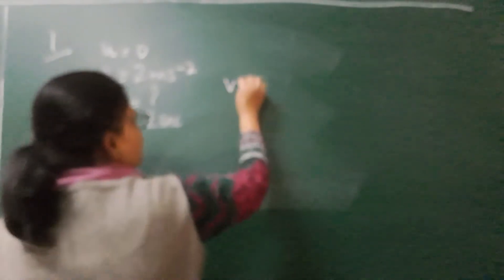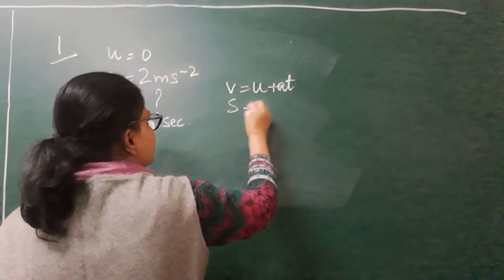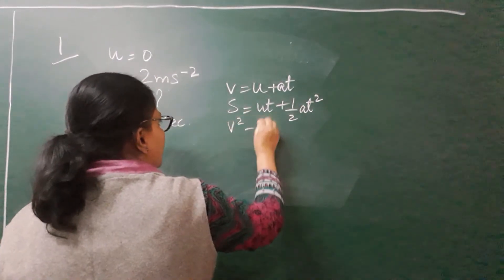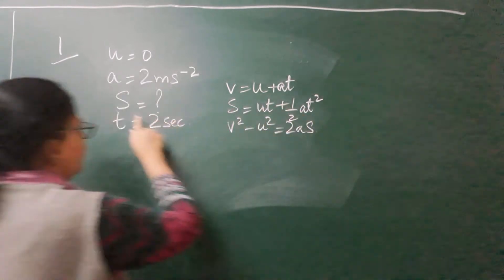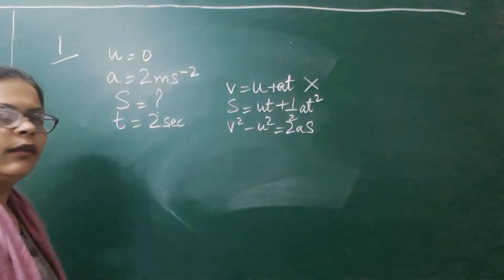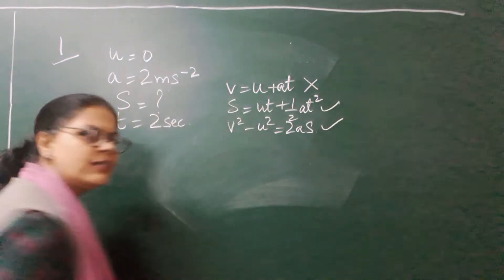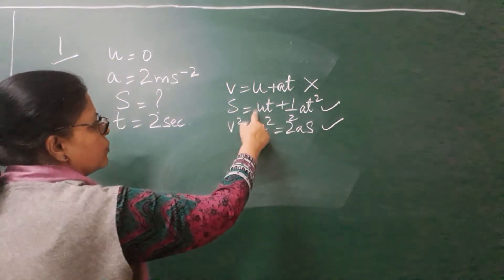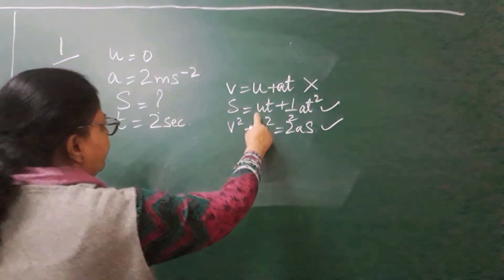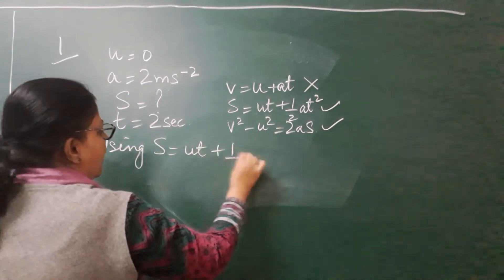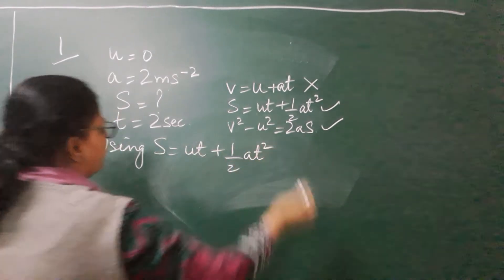Now, you are supposed to find out the value of S. The three equations are: V = U + AT, S = UT + ½AT², and V² − U² = 2AS. I need to find out the value of S. There is no need to use the first equation because there is no S in it. I can either use the second or the third. I will use S = UT + ½AT².